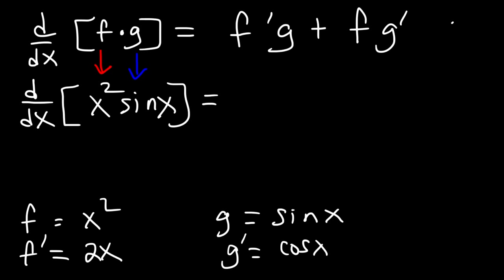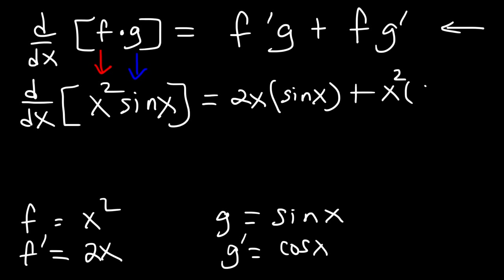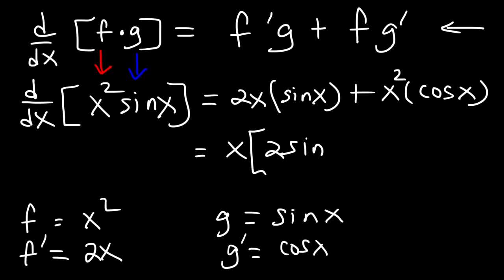So now all we need to do is plug in what we have into that expression. So f prime is 2x times g which is sine x, plus f which is x squared, and then g prime is cosine x. And so that's the answer. Now if you want to, you can factor out the GCF which is x. So if I take out an x I'll be left with 2 sine x plus x cosine x.